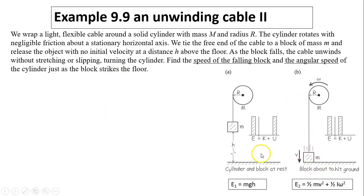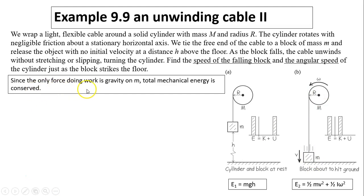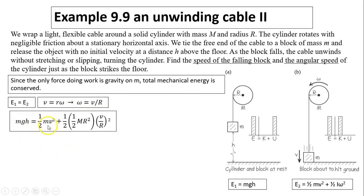We can use kinematics to find the tension or we can just use the energy concept. Energy before is E1 equals MGH. That's the mass block. And energy after, both the mass block is moving and the cable is moving. Since the only force doing work is gravity, total mechanical energy is conserved. E1 equals E2. We said V equals R times omega, so omega equals V over R. So we have MGH equals 1/2 MV squared plus 1/2 I omega squared. From here, you can solve for V.